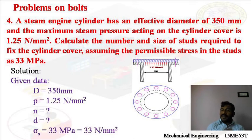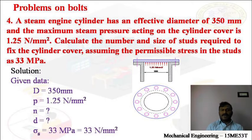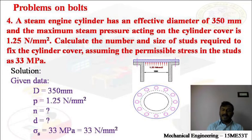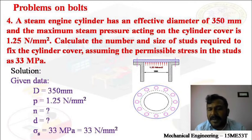The two unknowns are N and D. Please remember: permissible stress, working stress, design stress, allowable stress, and safe stress are all the same, because these stresses are calculated using the factor of safety — that is, yield stress divided by factor of safety, or ultimate stress divided by factor of safety. The permissible stress is 33 MPa, and 1 MPa equals 1 Newton per mm square, so that is 33 Newton per mm square.